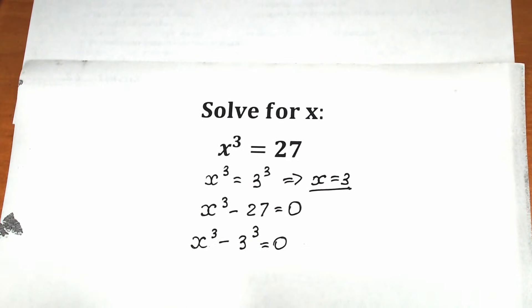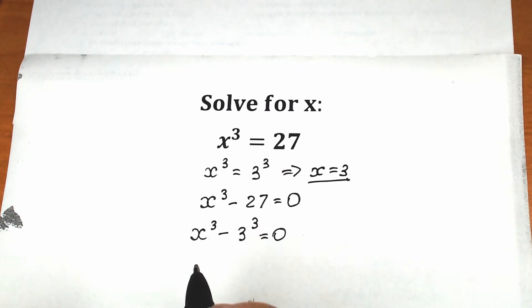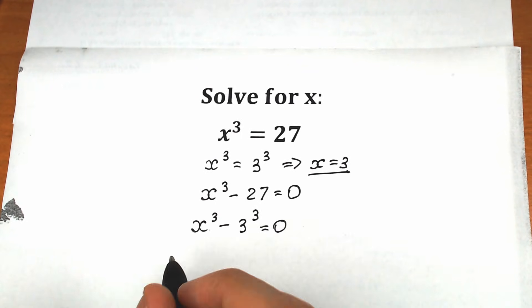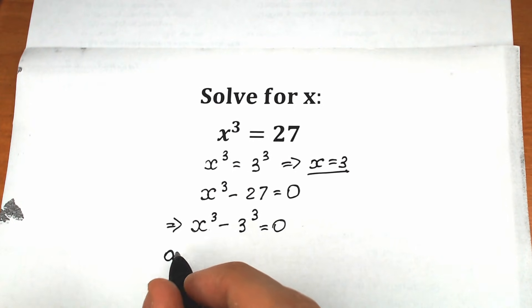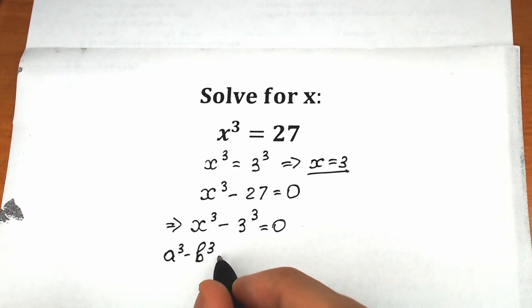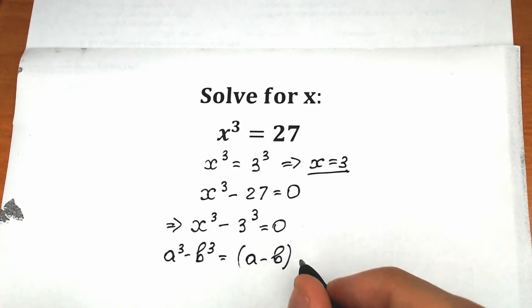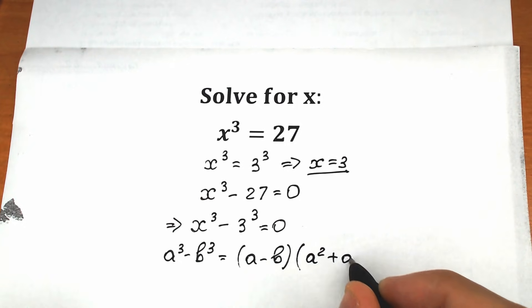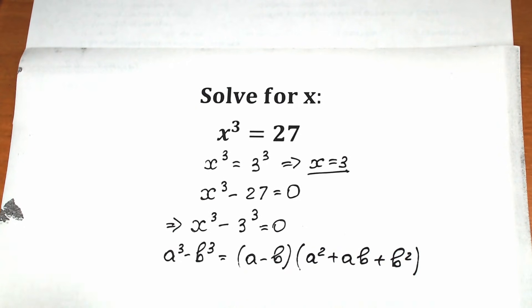Now if we look closely from another perspective, we have the difference of two cubes — a cubed minus b cubed. Let's remember and apply the formula: a cubed minus b cubed equals (a minus b) times (a squared plus ab plus b squared). This is our formula.